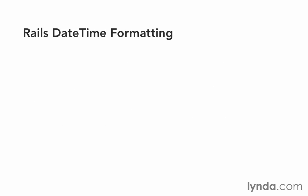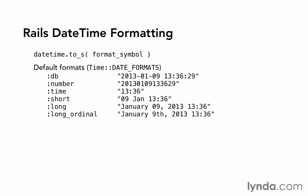Rails also offers us some datetime formatting. We can take a datetime and call to_s on it — that'll convert it to a string. We pass in as an argument the format symbol that we want. Not a format string like we had with strftime, but a format symbol. There are a number of default format symbols built into Rails. So for example, if we pass in the format symbol :db, then it would return a string formatted like 2013-01-09 followed by a space and then the time, including the seconds after it.